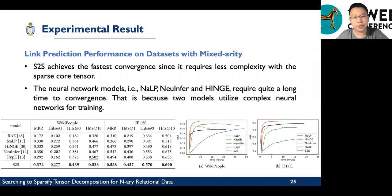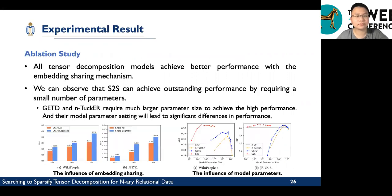And how about the link prediction performance on the dataset with mixed varieties? Generally, S2S still achieves faster convergence since it requires less complexity with sparse core tensor. You can see that the neural network models like RAE, Neural LP, and HINGE require quite a long time to converge. That is because these models utilize complex neural networks for training.